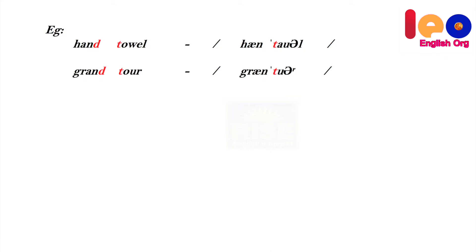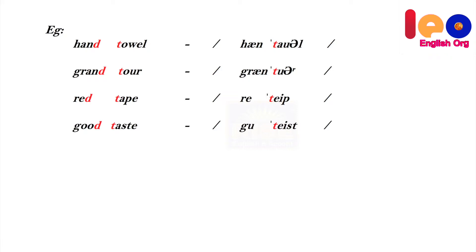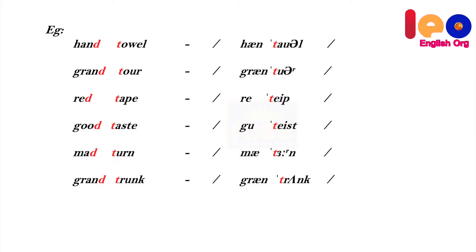Similarly, don't say 'grand tour', say 'gran tour'. Don't say 'red tape', say 're tape'. Don't say 'good taste', say 'goo taste'. Don't say 'mad turn', say 'ma turn'. Don't say 'grand trunk', say 'gran trunk'. Note: stress is on the second syllable.